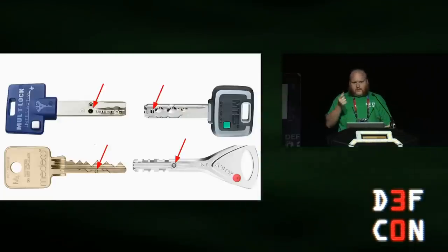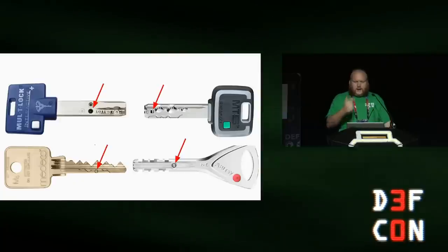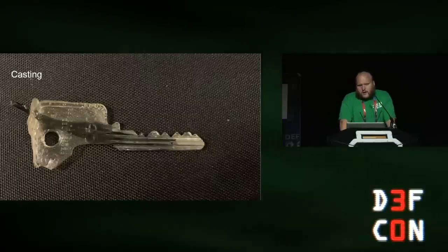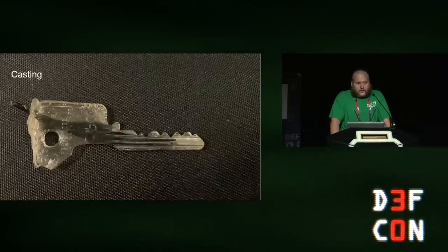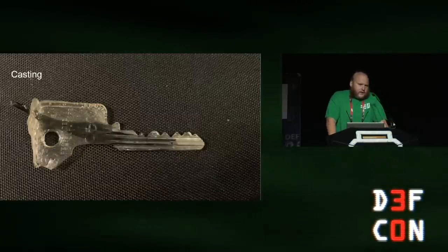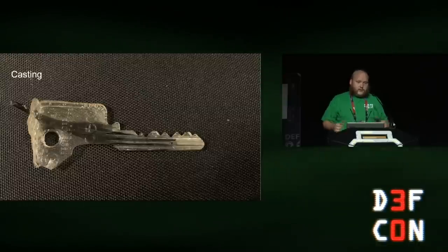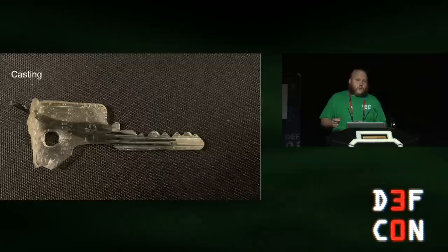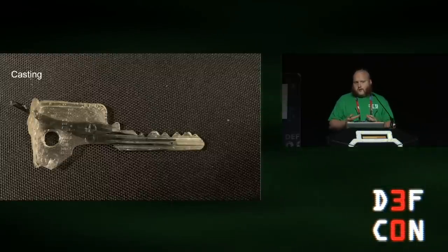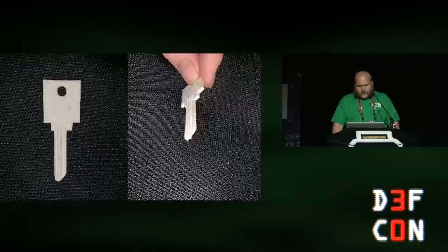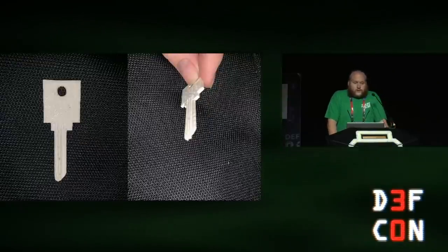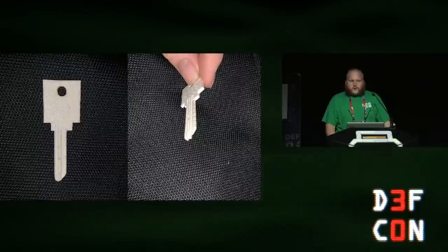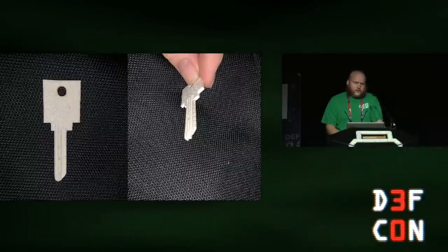Why does it have to move? Why can't it just be static? Because it won't actually fit in the lock if it's static. This protects against casting of keys, because a cast key is completely static — that solid cast won't work to operate the lock. It also provides some protection against 3D printing, because a 3D printed key is generally a solid piece of material.